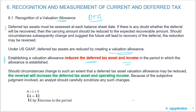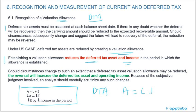Because of the subjective judgment involved, an analyst should carefully scrutinize any such changes. This is really easy to understand. You've got a deferred tax asset — that's an asset. Assets equals liabilities plus equity. The valuation allowance is when we are reducing the deferred tax asset, so equity has to go down and it's going through the income statement — it's going to reduce the income.